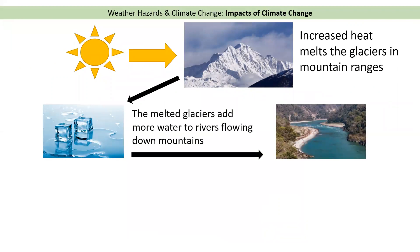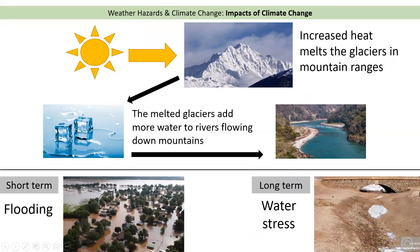Melted glaciers add lots more water to the rivers that flow down from the mountains. Rivers start in the mountains and flow towards the sea, but those rivers will have far more water because more glaciers are melting. In the short term, the first impact is that this may lead to flooding — if those rivers have far more water than they can handle, areas further downstream will experience far more flooding.